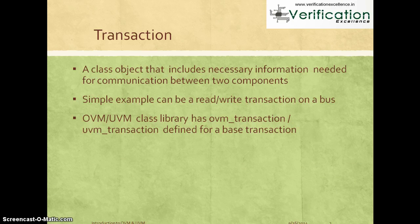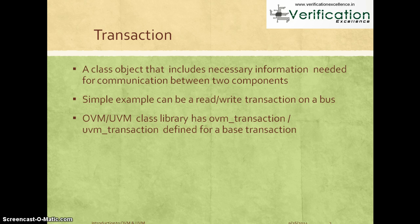We'll start with what is meant by a basic transaction. A transaction can be thought of as an abstract way of grouping all the information needed to communicate between two components. A simple definition: a transaction is like a class object that includes all the necessary information needed for communication between two components. For example, suppose you have a bus connected to memory and you need to do a read or write through the bus to the memory.